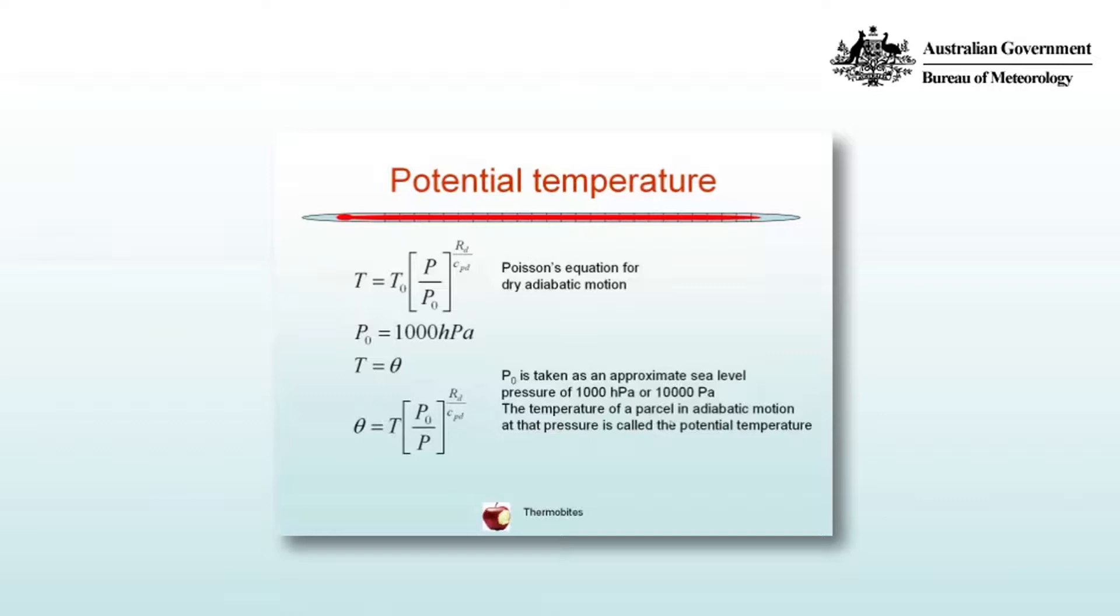If we let P₀ = 1000 hectopascals, we can define the potential temperature theta as θ = T(P₀/P)^(Rd/Cpd), where P₀ is 1000 hectopascals.